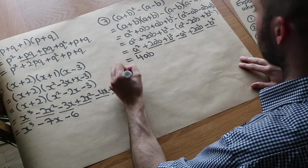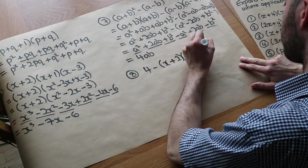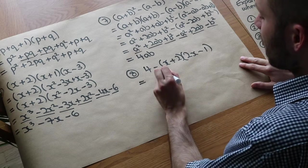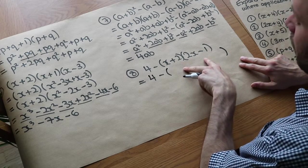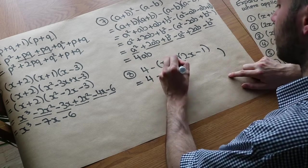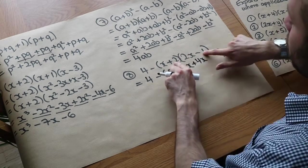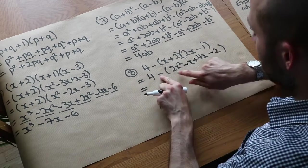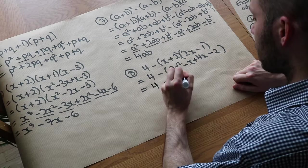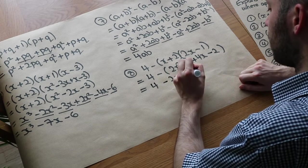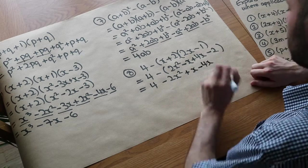One more example: 4 minus (x + 2)(2x − 1). Since we're subtracting an expression being expanded, we do 4 minus and leave a big bracket. Expanding (x + 2)(2x − 1): x times 2x is 2x squared. x times minus 1 is minus x. 2 times 2x is plus 4x. And 2 times minus 1 is minus 2. So we've got 4 minus the bracket containing 2x squared minus x plus 4x minus 2.